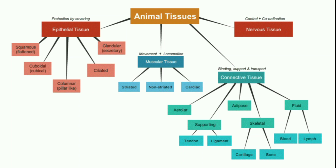Supporting tissue has two types: tendon and ligament. The third type is adipose. The fourth is skeletal, which has two types: cartilage and bone. The last one is fluid, which includes blood and lymph. These are all the connective tissues.